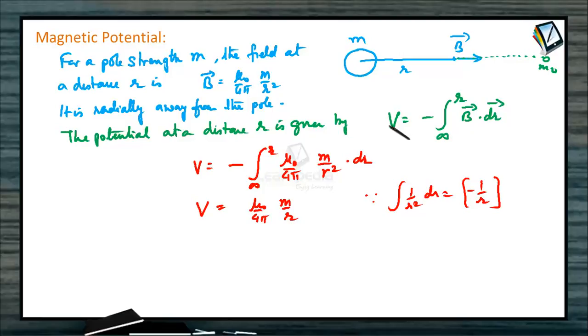So magnetic field can be written as minus dV by dr. This is the potential of a single pole or magnetic pole. From this particular equation, we can write magnetic field B is equal to minus dV by dr, where V is the potential.